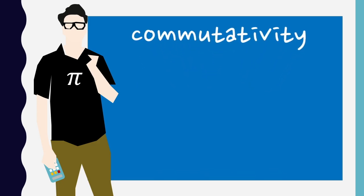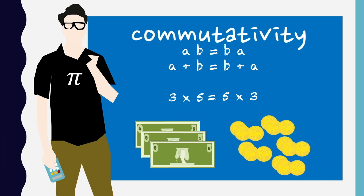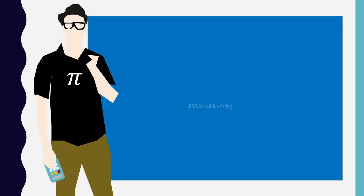Commutativity means that the order either side of the operation doesn't matter. Three groups of five is the same as five groups of three, or five times three dollars is the same as three times five dollars, even though they might refer to different situations.